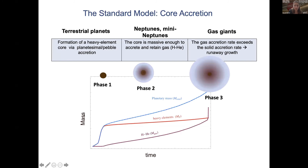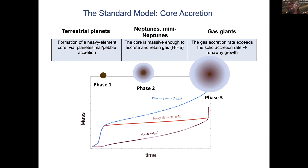There are three different phases. The red curve is heavy elements — the solids accreted. The blue is the hydrogen-helium gas mass, and the light curve is the total planetary mass. Phase one is dominated by accretion of heavy elements or solid material — this is the phase that leads to terrestrial planet formation if accretion stops there. The idea is that a giant planet first forms a heavy element core via planetesimal or pebble accretion.